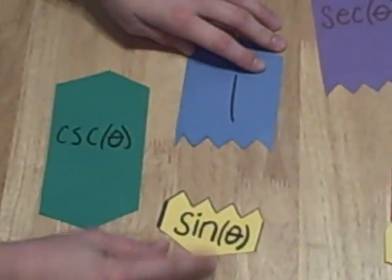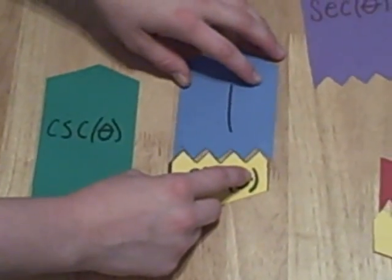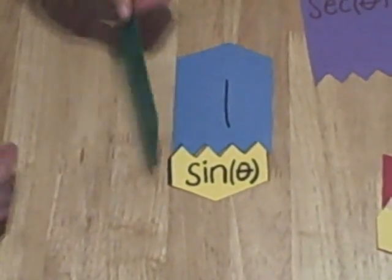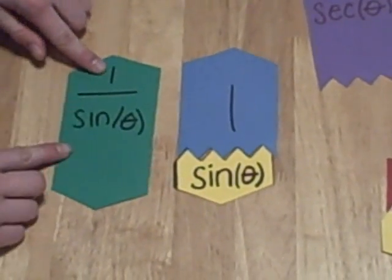For instance, this 1 can go on top of this sine to form the same shape as this cosecant. If we flip this over, we see that it is indeed 1 over sine.